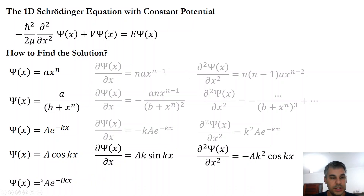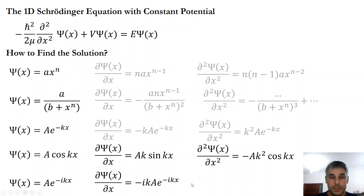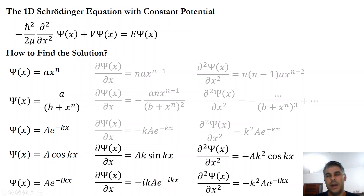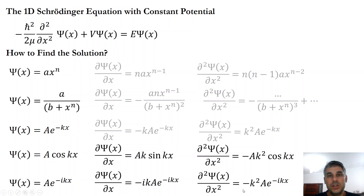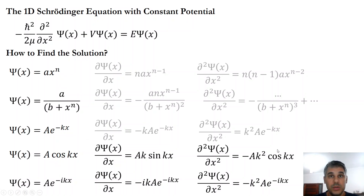For the complex exponential, the first derivative is minus i times k times a times the same exponential, and the second derivative gives minus k squared times a times the exponential. This is because minus k times minus k gives positive k squared, but i squared equals minus one since i is the square root of minus one, so we get the required minus sign. Replacing this into the Schrödinger equation, this is also a solution. So the last two candidate functions — cosine and complex exponential — are both solutions.